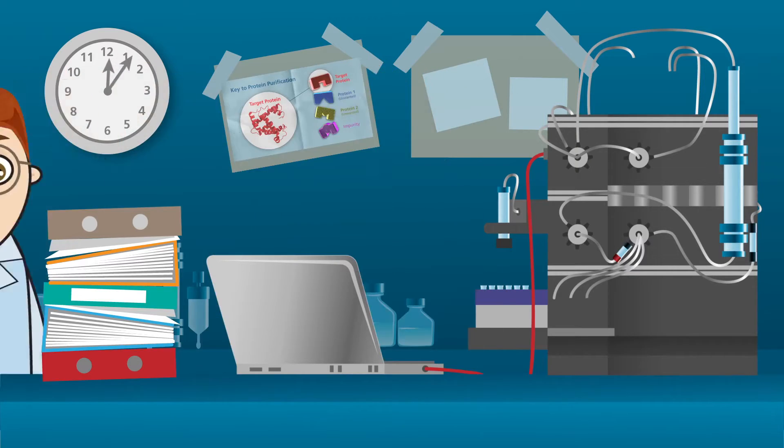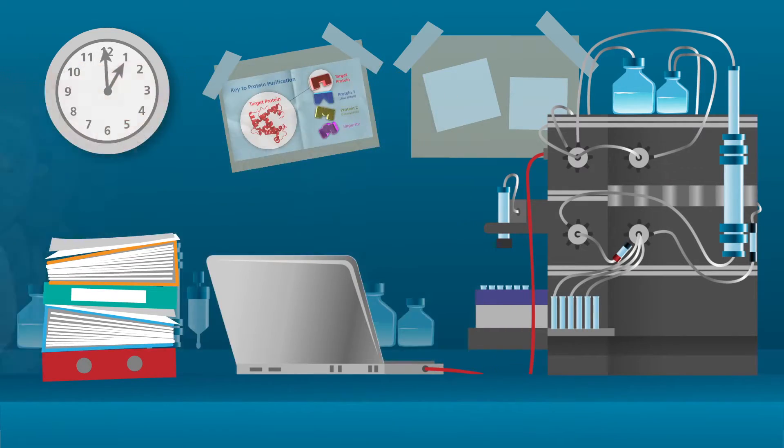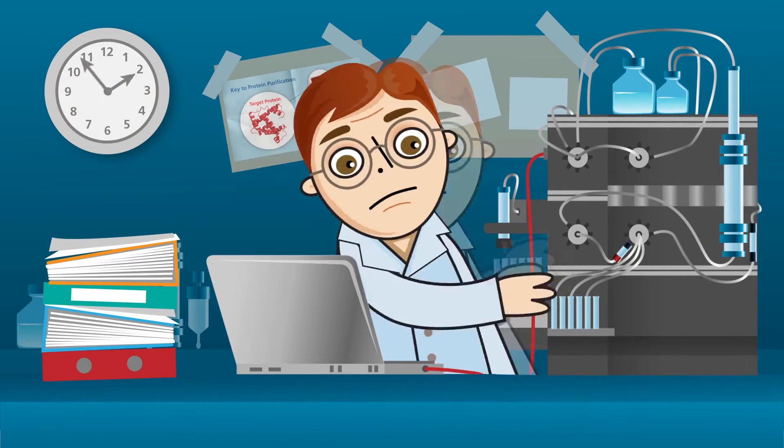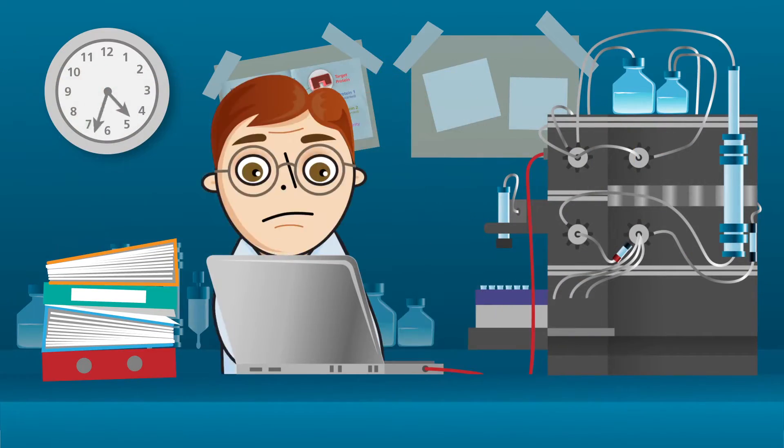Mike's classical downstream processing strategies often require multiple inefficient chromatographic steps, which create more work for Mike and may lead to low overall yields and ultimately longer time to market.